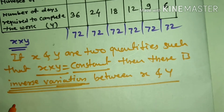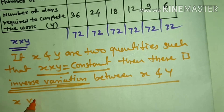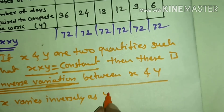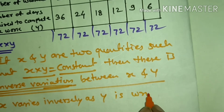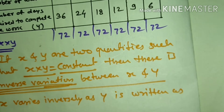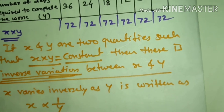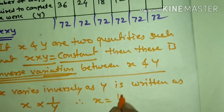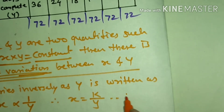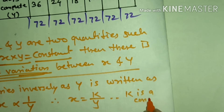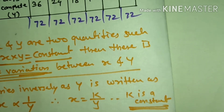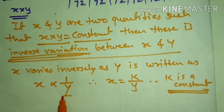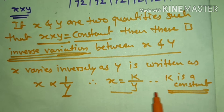It is written as: x varies inversely as y. Remember here — when we say x varies inversely as y, we write y as its inverse. The equation becomes x is equal to k upon y, where k is constant.